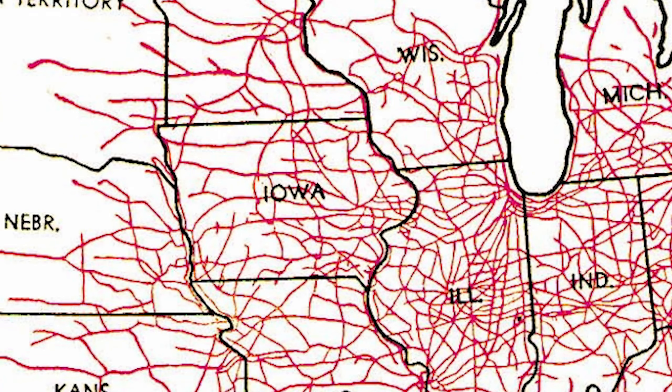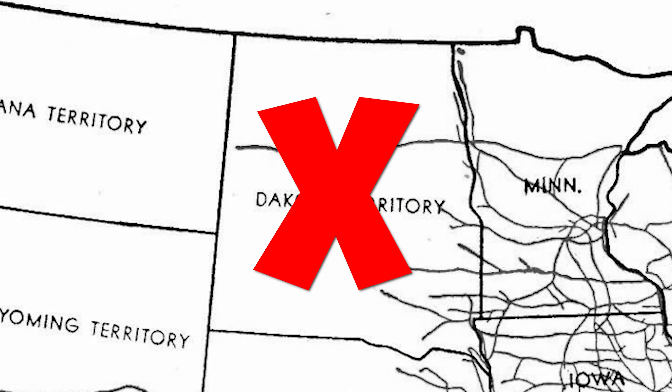In 1861, the Dakota Territory was created looking like this, but it would soon become just the Dakotas. To encourage people to settle west, the U.S. passed the Homestead Act of 1862, which allowed people to get 160 acres of land for $10 to $18.